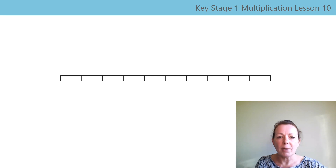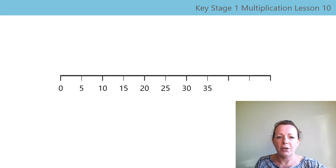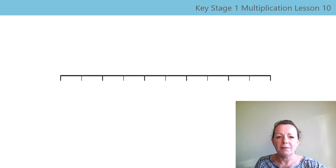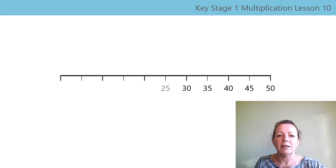Now, let's practice skip counting in fives. Zero, five, ten, fifteen, twenty, twenty-five, thirty, thirty-five, forty, forty-five, fifty. And backwards: fifty, forty-five, forty, thirty-five, thirty, twenty-five, twenty, fifteen, ten, five, zero. Well done!